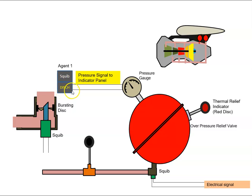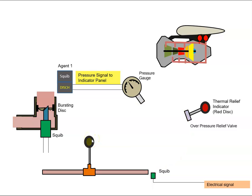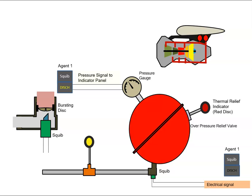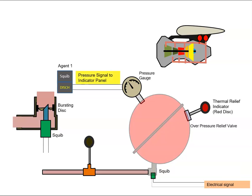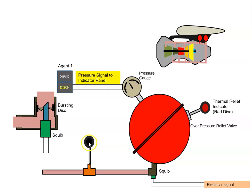You may also have an external indication: as the extinguishing agent goes down through the pipes, it blows out a yellow disk. When it gets discharged, this yellow disk disappears. This may or may not be available on the aircraft — it's an external disk that you can check for on the walk-around to see if the disk is there or not.